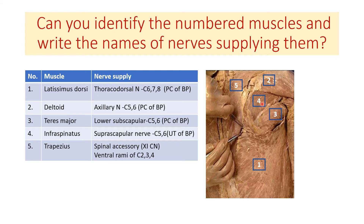The fourth one is the infraspinatus muscle, which is supplied by the suprascapular nerve, which arises from the upper trunk of the brachial plexus. The fifth one is the trapezius muscle, which is supplied by the spinal accessory nerve — the 11th cranial nerve — and also the ventral rami of C2, C3, and C4.